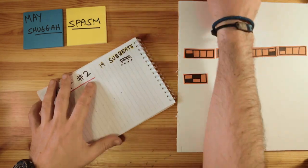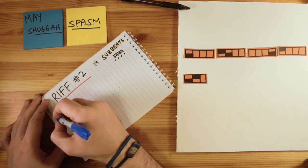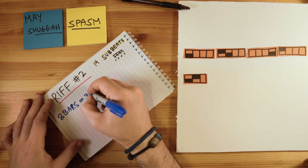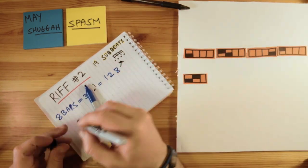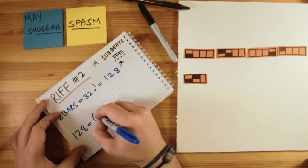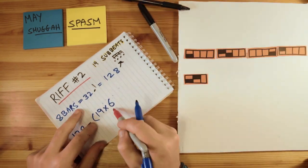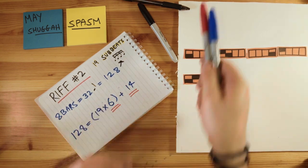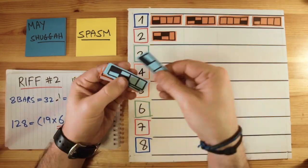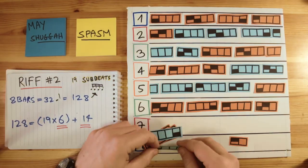So switching to thinking in smaller beats, our 32 main beat frame becomes 32 times 4, 128 sub-beats. Which means our 19 sub-beat phrase can be played six full times, with a remainder of 14 beats, which again would be stolen from itself.